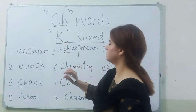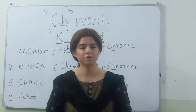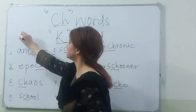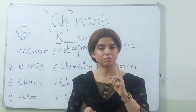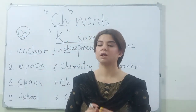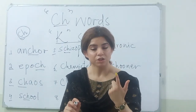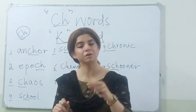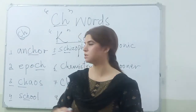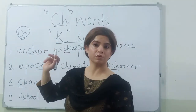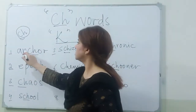So the CH words with a K sound — they are actually like 'anchor.' What I want to tell you is that you have seen these two letters C and H. They are two letters but they are not blended — they give you one sound. If it is a K sound then it will be one sound; if it is a CH sound then it will be one sound. The letters are two but they give you one sound.